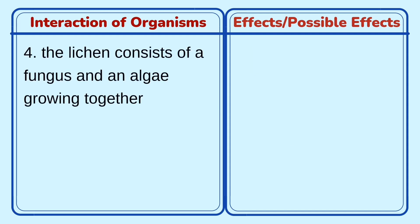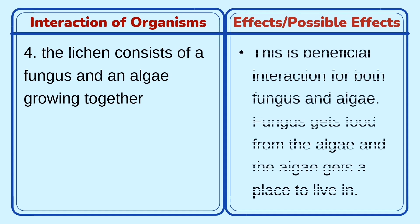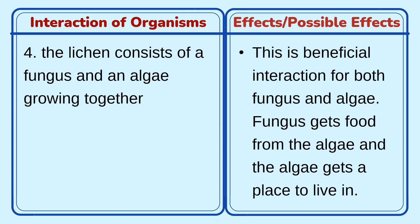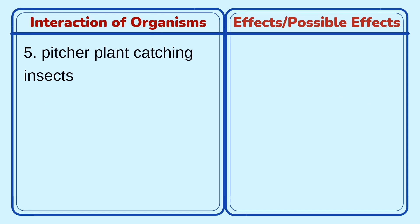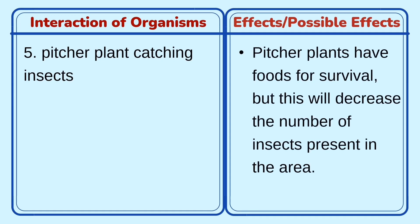The fourth interaction — lichen, which consists of a fungus and an algae growing together. The possible effect is that this is a beneficial interaction for both the fungus and the algae: the fungus gets food from the algae, and the algae gets a place to live. And the last interaction — a pitcher plant catching insects. The possible effect is that the pitcher plant gets food for survival, but this will decrease the number of insects present in the area.